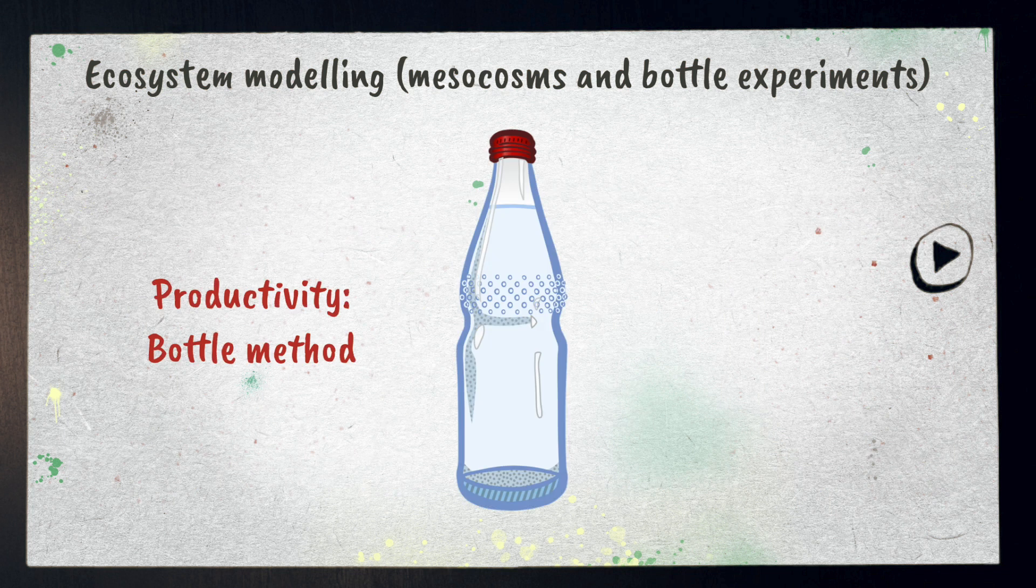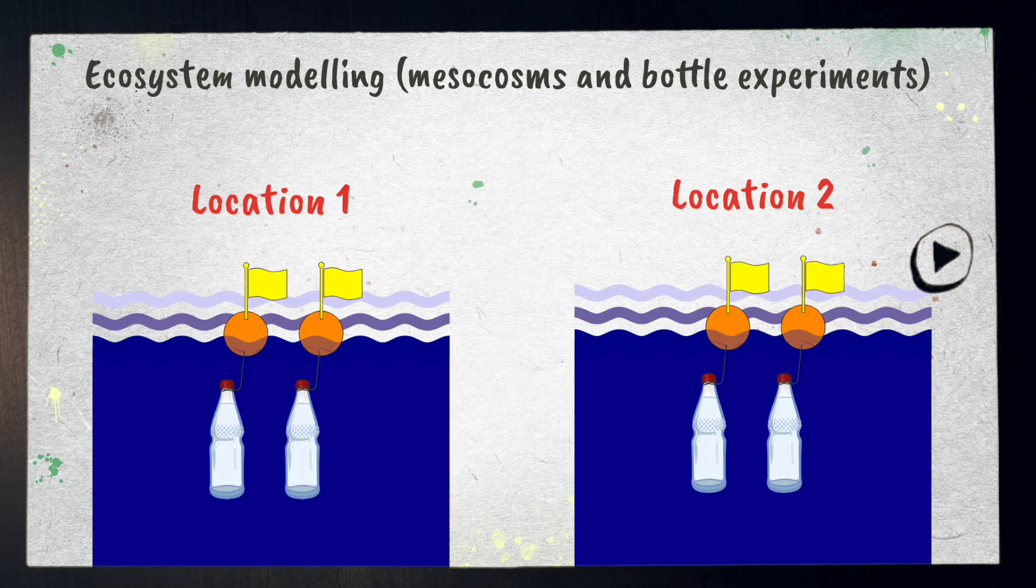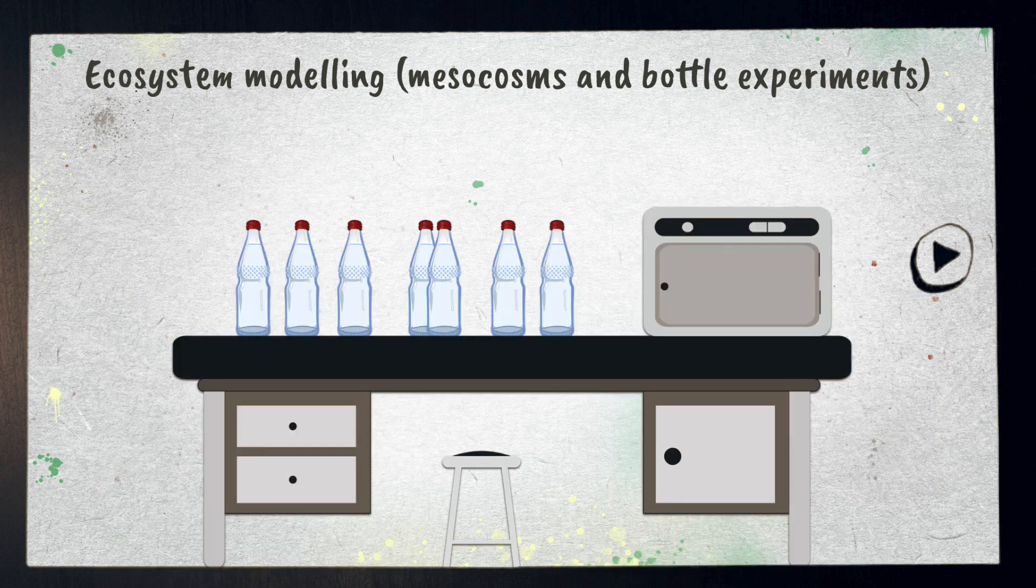You might be familiar with bottle experiments for measuring productivity. I won't go into it in great depth here but basically you measure the changes in dissolved oxygen content in the water in the bottles to determine different values linked with productivity in aquatic ecosystems. You could perhaps measure and compare productivity in different places or you could set this up in a lab and alter certain variables like light intensity or temperature.